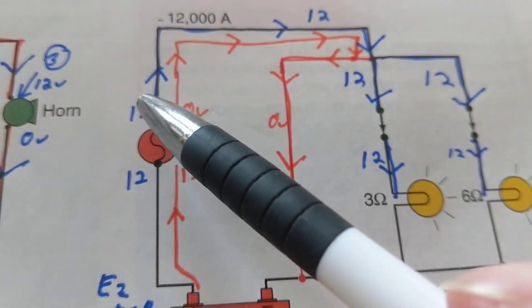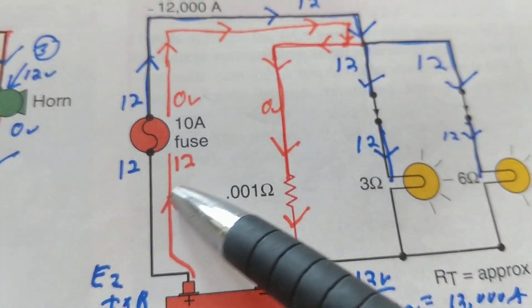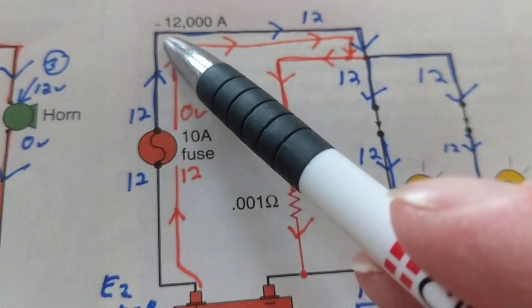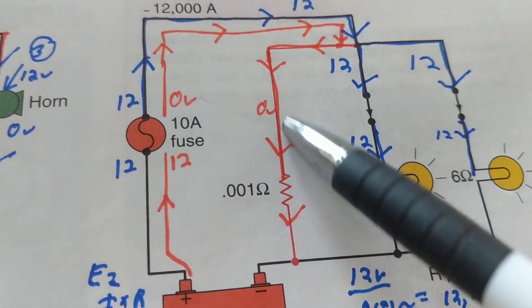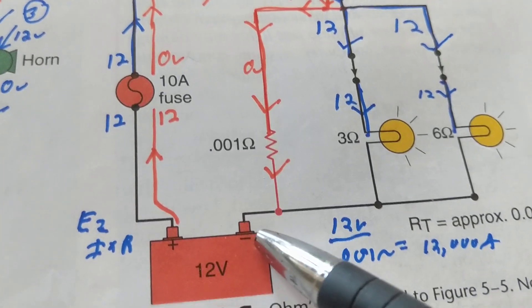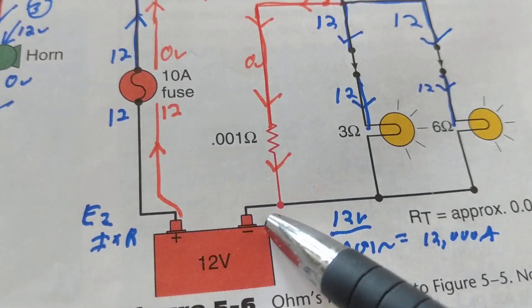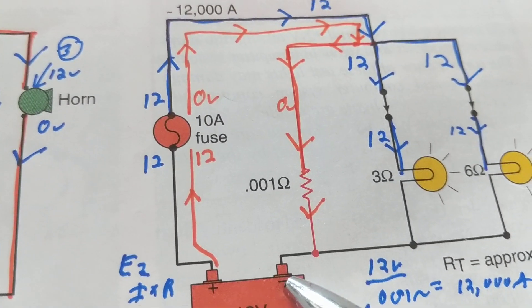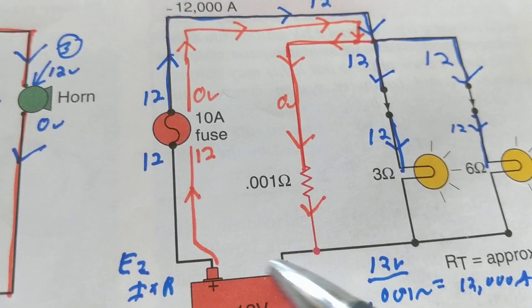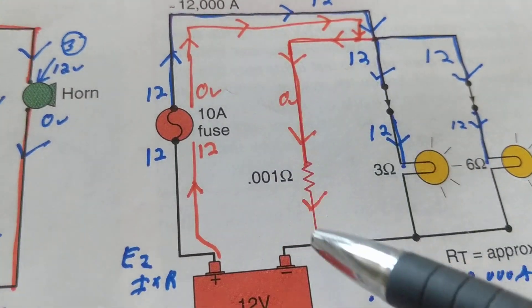Without a fuse, a jumper from positive all the way to negative is essentially jumping the battery directly. Obviously, a battery cannot supply 12,000 amps — that's why fuse protection is absolutely essential in any circuit.